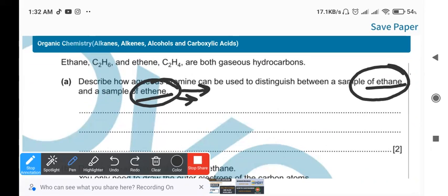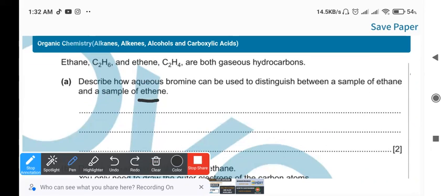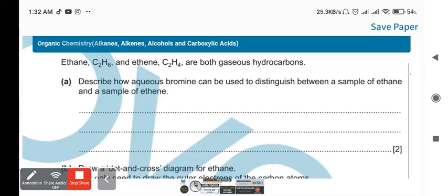But in case of ethane, the bromine will not get added. So when we are using bromine with ethene, the color of bromine would change from brown to colorless - we call it the decolorization of bromine. But in case of ethane, there will be no decolorization of bromine.